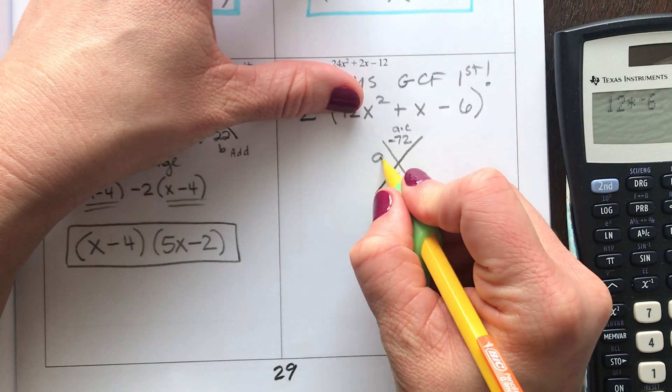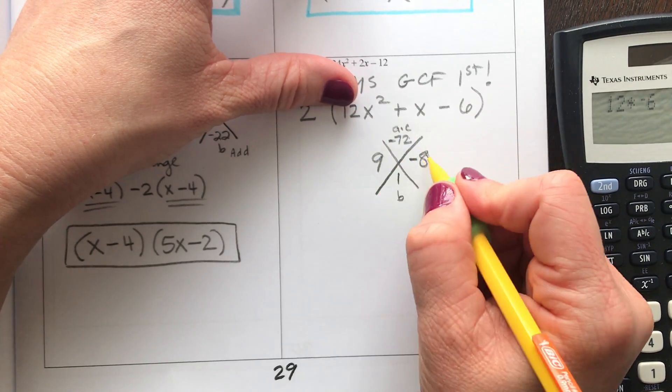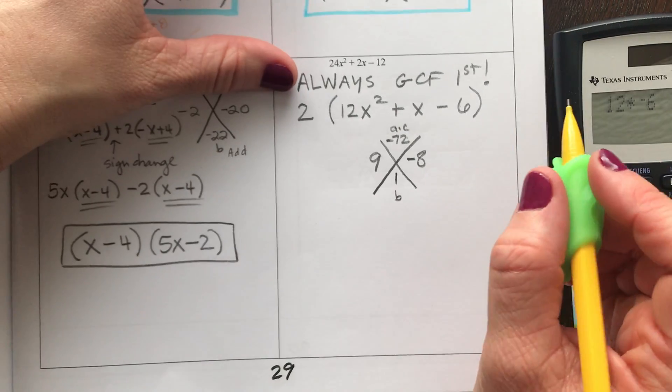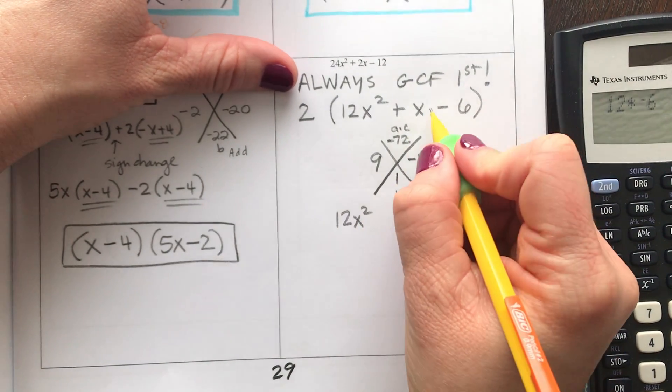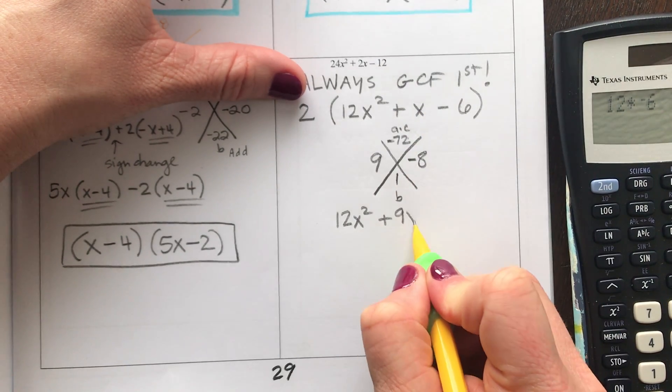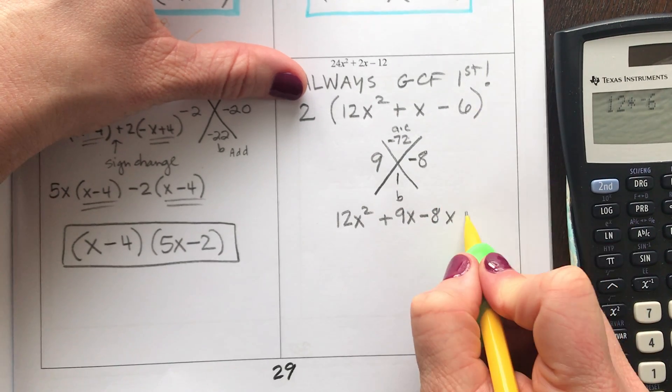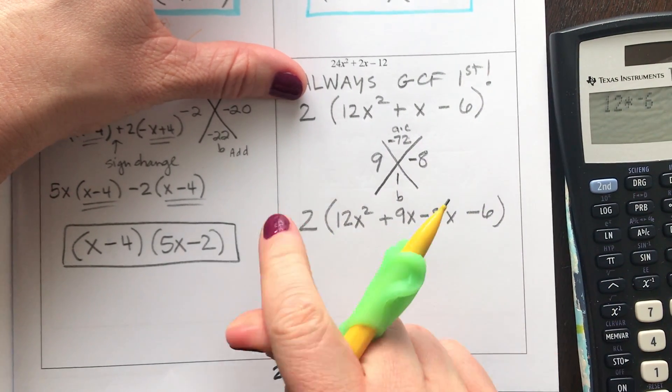What two numbers multiply to make -72 and add to make 1? Well, 9 and an 8. What if it's 9 and -8? That will multiply to make negative, and add to make 1. So now here's my split the middle method. The 12x². But now this middle term, the x, is going to be split up with a 9x and a -8x. And then I have -6. Don't forget about that GCF we took out front.